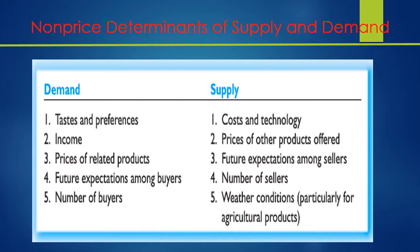On the supply side, cost and technology can affect the supply of products and services. Regarding prices of other products offered, we've seen how the iPhone used to be the king of the jungle when talking about consumer smartphones, and then after a number of years, Android came along.